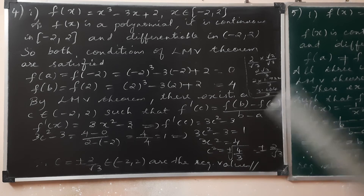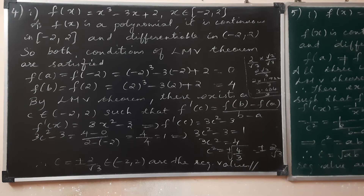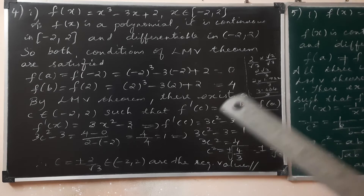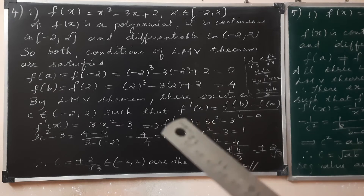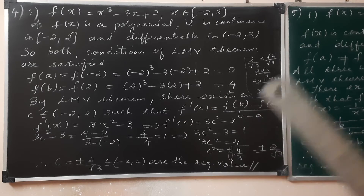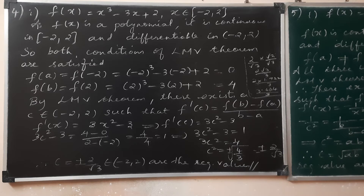The condition is that f'(c) equals [f(b) minus f(a)] divided by [b minus a]. If you look at f(b) minus f(a) over b minus a, that is y2 minus y1 over x2 minus x1 — which is the slope of line AB, the secant line. And at point c, the tangent slope equals the secant slope, so they are parallel.